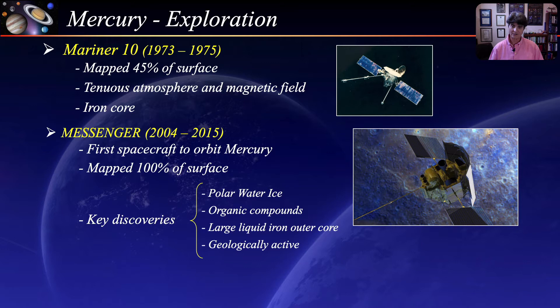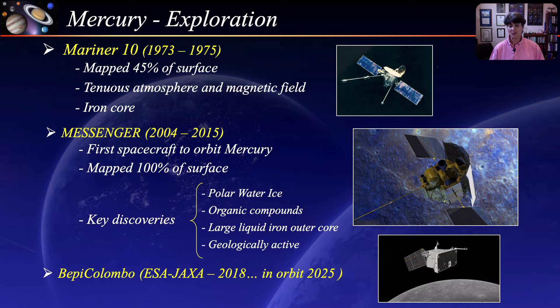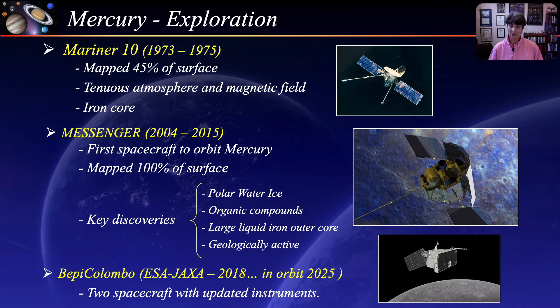In April of 2015, Messenger ran out of propellant and deorbited as planned, crashing into Mercury's surface. The next explorer is BepiColombo, a joint European and Japanese mission launched in 2018 that will settle into orbit in 2025. BepiColombo comprises two spacecraft with much more sophisticated instruments than Messenger, so we expect to learn much more about the planet.